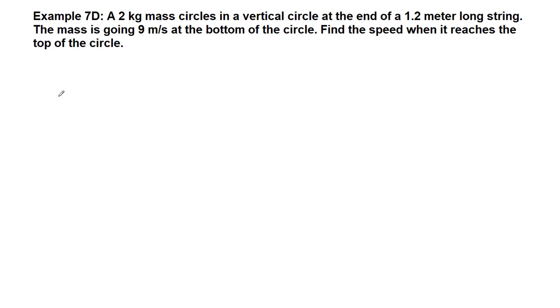Welcome back to another example from Chapter 7. We have a mass circling, which should immediately remind you of Chapter 6 problems. We're told the mass is going 9 meters per second at the bottom of the circle. The speed here at the bottom is 9 m/s, and it will be going around. We're trying to figure out what happens to the speed at the top of the circle, so v final is unknown.